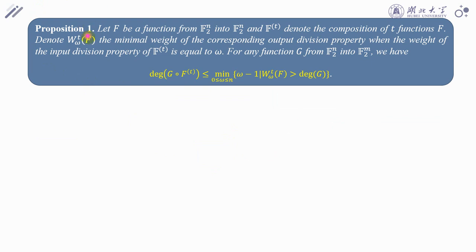This is our bridge. Based on division property, we propose the bound on the composite function. FT denotes the composition of T function of F. Wt omega F denotes the weight of minimum of output division property of FT when we fix the weight of input DP to omega. Thus, the degree of this composition is upper bounded by the minimum of this set.